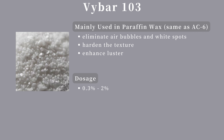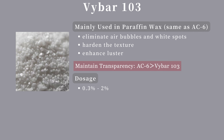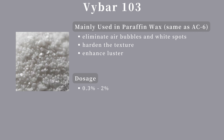Another type of wax additive is the VEBAR series, with VEBAR 103 commonly used in handmade candles. In terms of improving luster and removing air bubbles, VEBAR 103 surpasses AC6, but is inferior in maintaining the transparency of paraffin wax. If the goal is merely to enhance hardness and luster without concern for transparency, VEBAR 103 is a perfect choice, with a dosage of 0.3% to 2%. The VEBAR series includes many additives, such as VEBAR 260, which controls oil content in soy wax, making the surface smooth and increasing maximum fragrance load — though this is not a must-have additive.